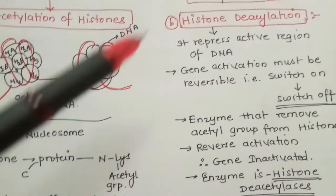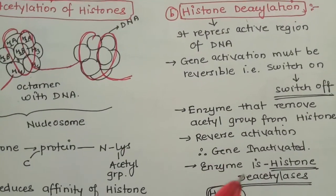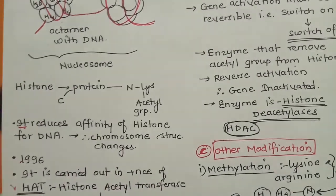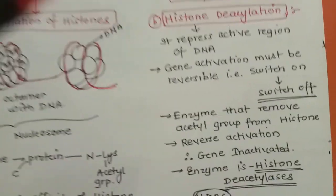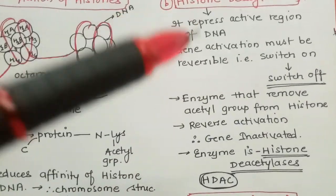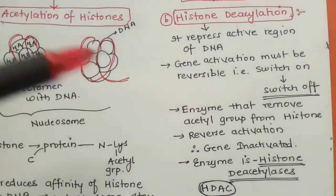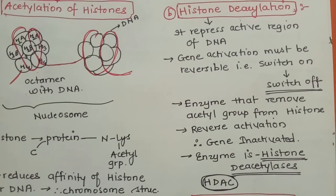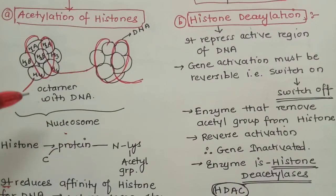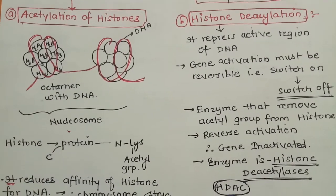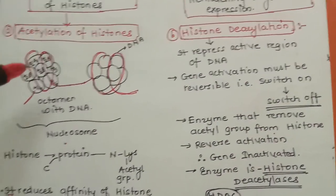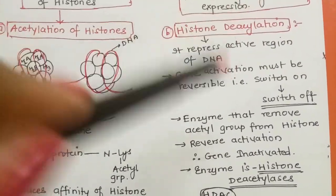The enzyme responsible for deacetylation is called histone deacetylase. Earlier the enzyme was HAT - Histone Acetyl Transferase - which transferred acetyl groups onto histones. Histone deacetylases remove the acetyl group from histones. As soon as the acetyl group is removed, the histone's affinity for DNA that had become loose is restored, and DNA is once again compactly arranged in the form of nucleosome. When it's compactly arranged, it will not participate in replication, transcription, and translation - so the gene becomes inactive. Acetylation makes the gene active and deacetylation makes the gene inactive or switched off.